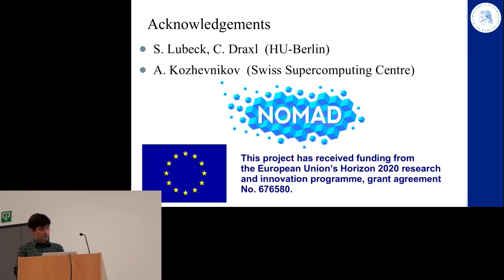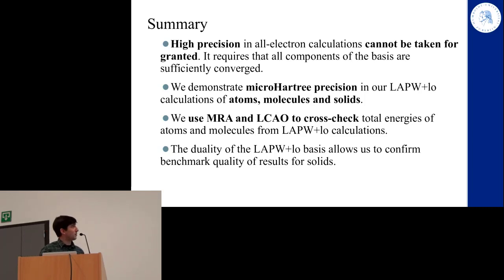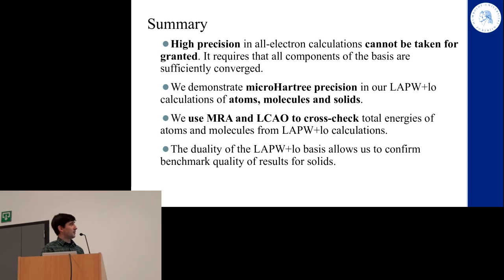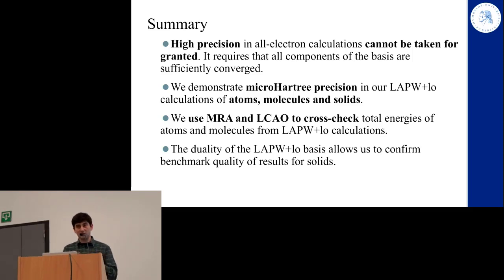Acknowledging collaborators from HU Berlin, the Swiss Supercomputing Center, and NOMAD, the summary is: high precision in all-electron calculations cannot be granted — it requires everything to be properly converged. Micro-Hartree precision is demonstrated in all three cases — atoms, molecules, and solids — using either cross-checking with independent tools or exploiting the duality of the LAPW basis to confirm that the results obtained are truly converged.